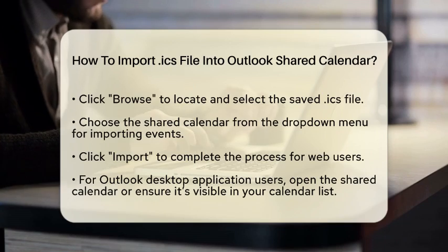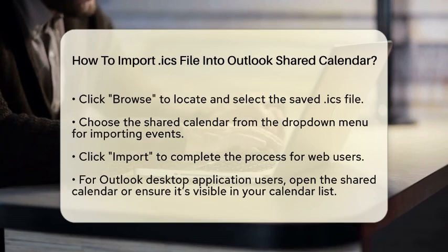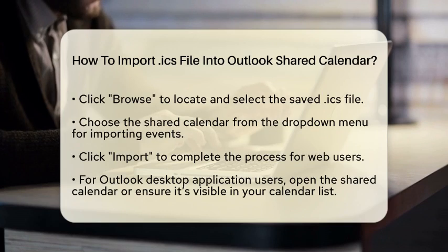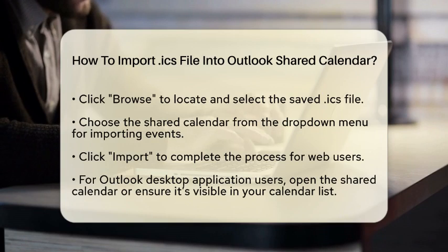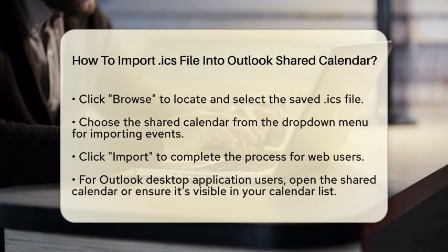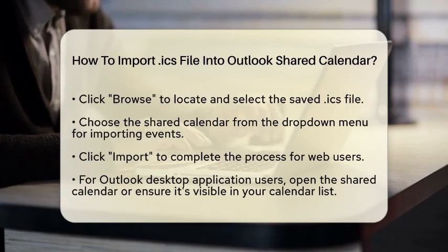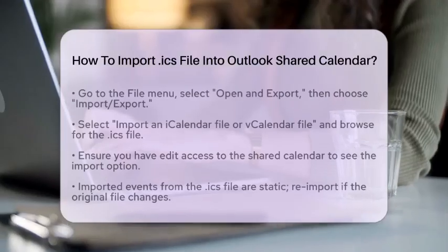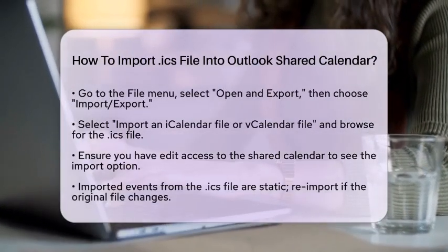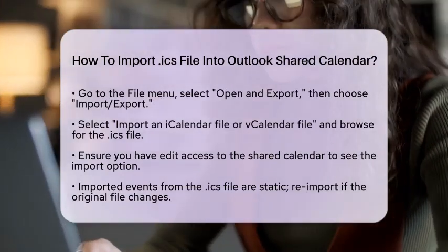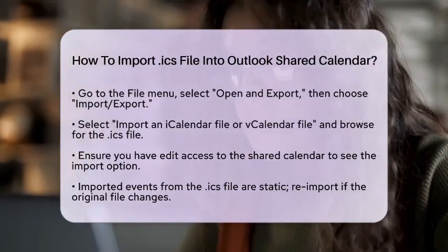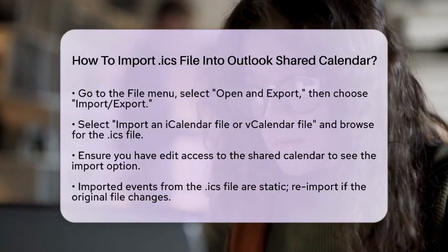If you are using the Outlook desktop application, the steps are slightly different. First, open the shared calendar directly or ensure it is visible in your calendar list. Next, go to the File menu, then select Open and Export and choose Import-Export. From the options, select Import an iCalendar file or vCalendar file. Then, browse to find your ICS file and select it. During the prompts, make sure to choose the shared calendar as your target.